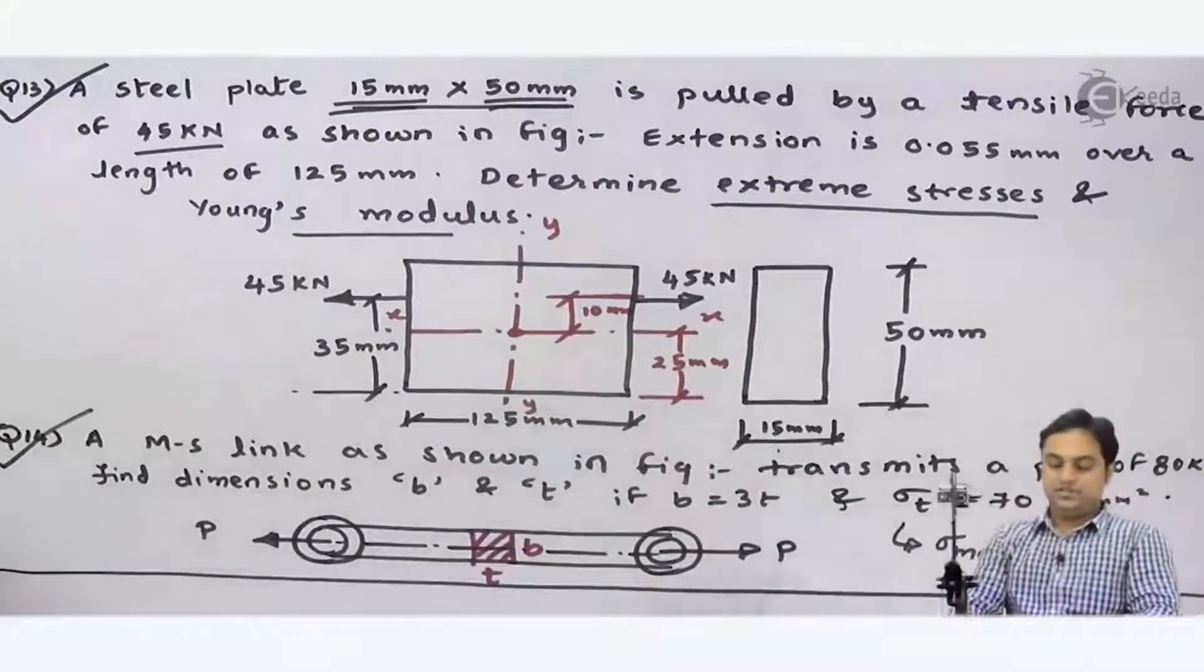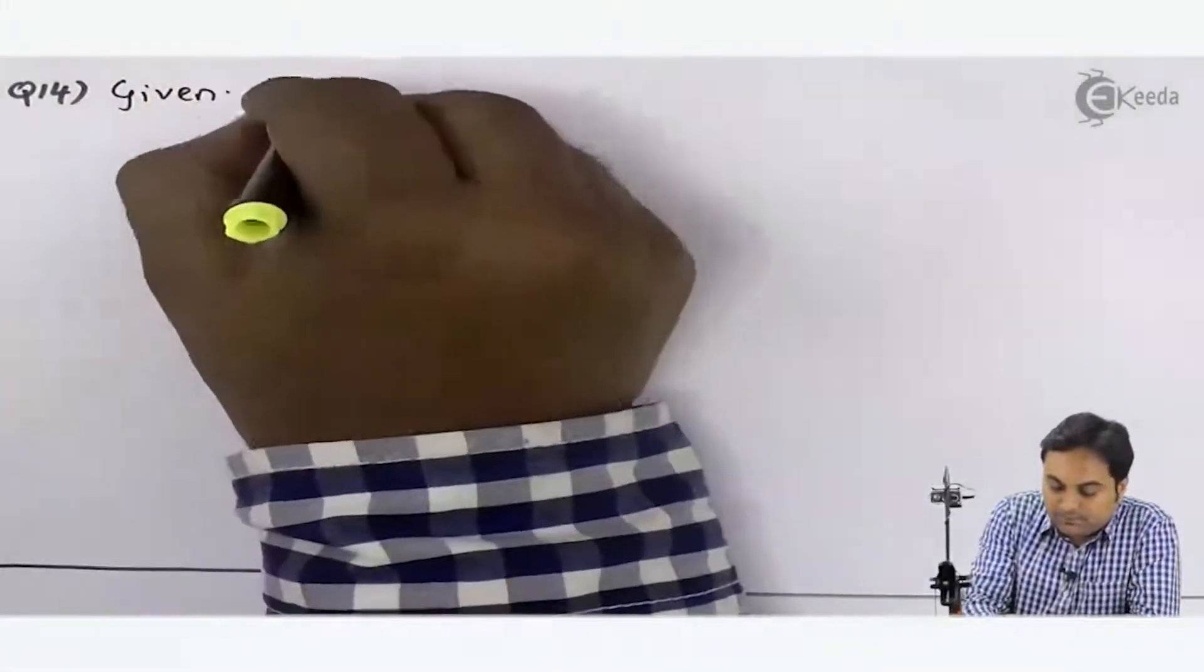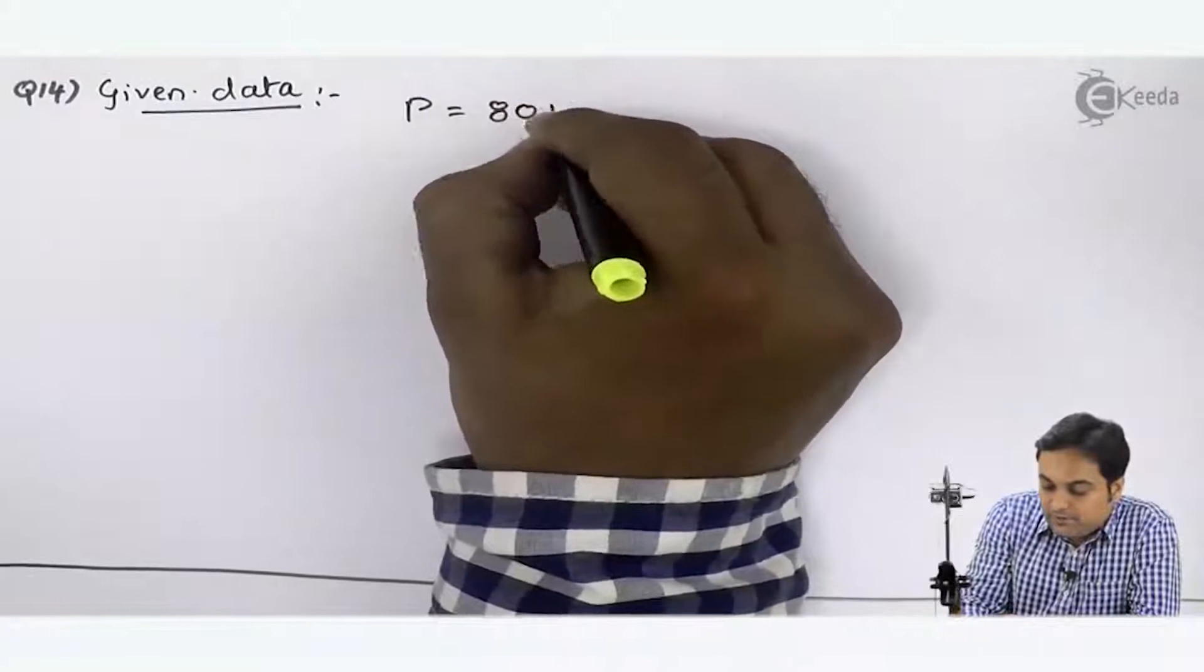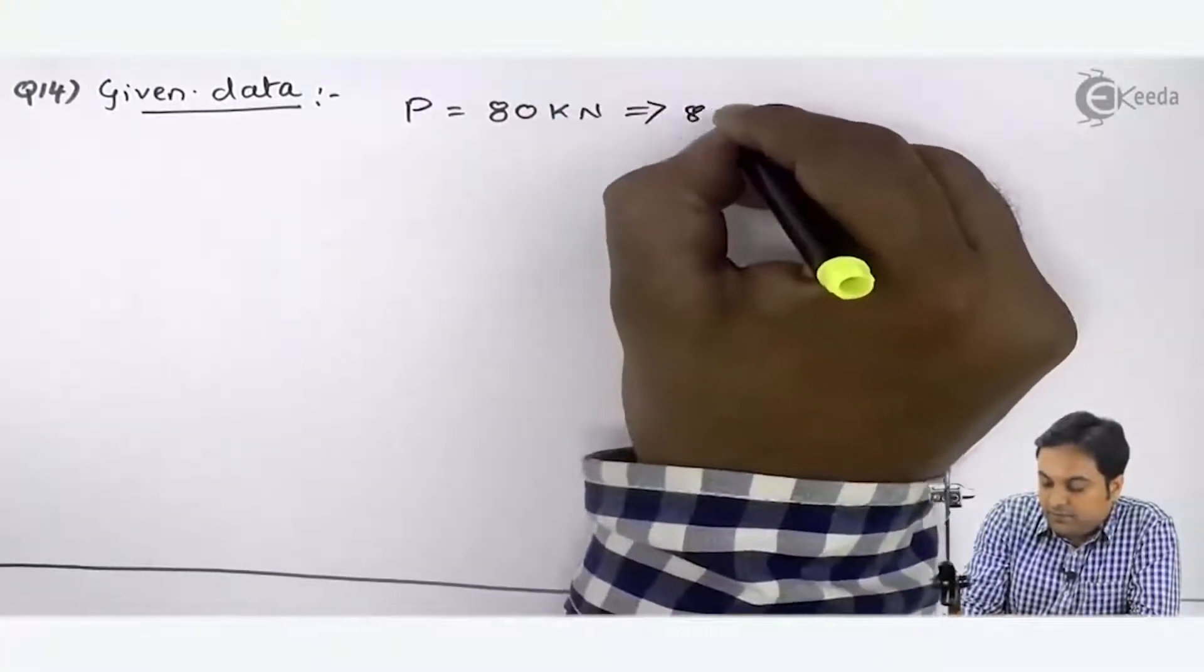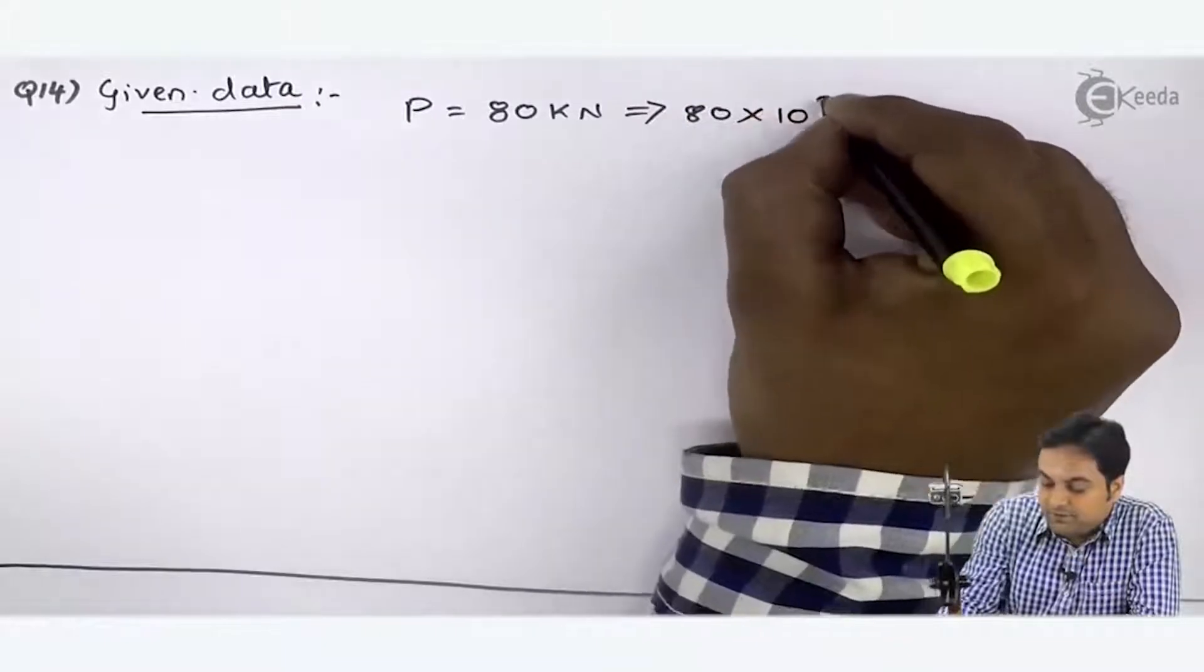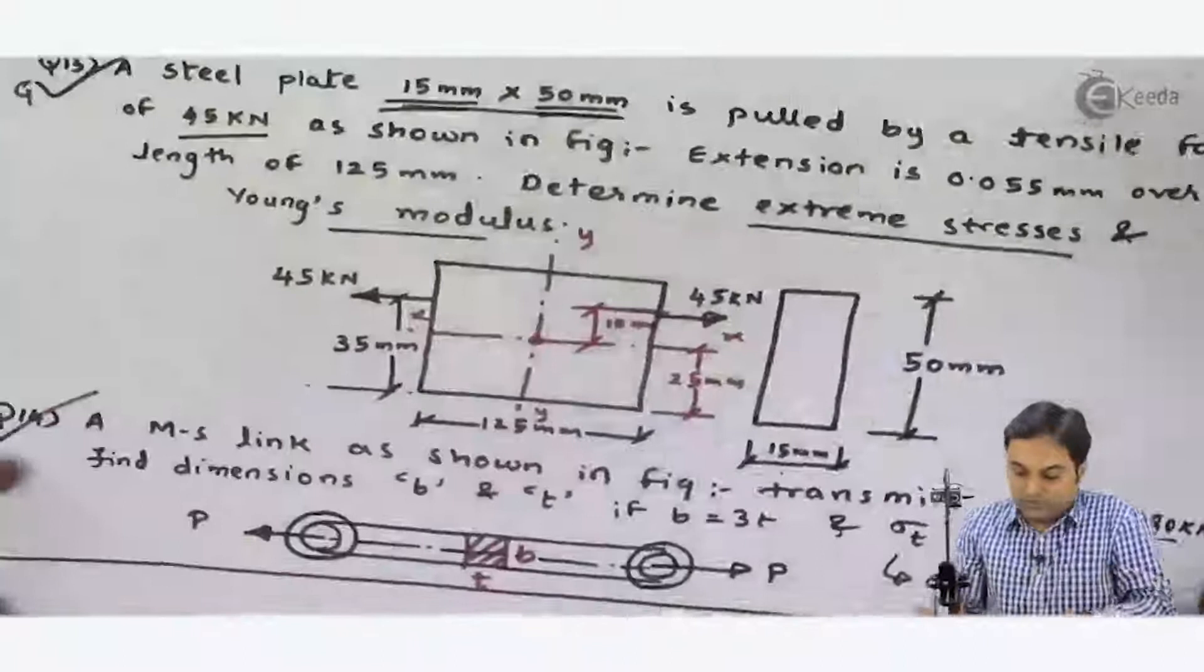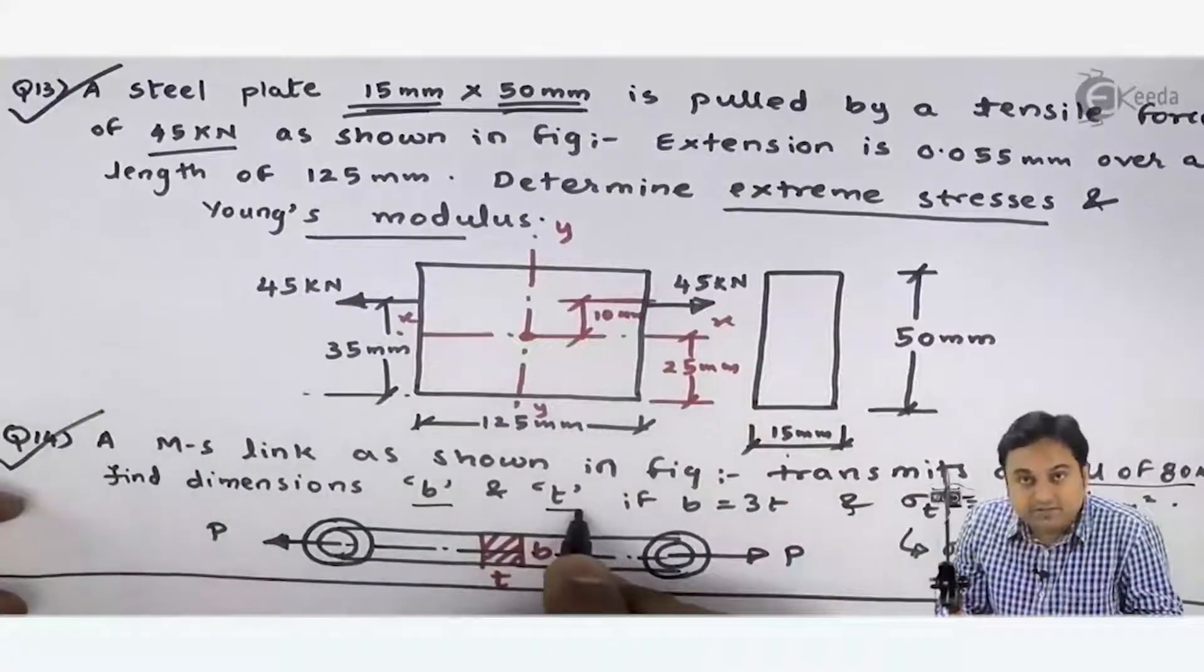This is our question. I'll write the data for this question number 14. Load capital P is equal to 80 kilonewtons, so that will be 80 × 10³ Newtons. Now, here it says find the dimensions B and T—means you have to calculate width and thickness.